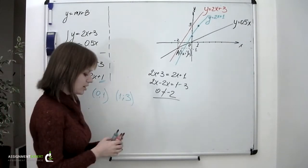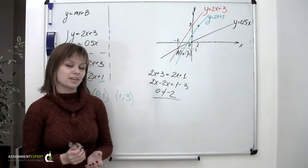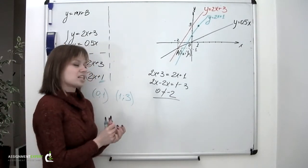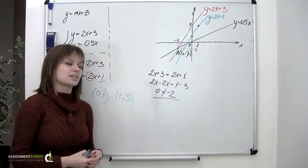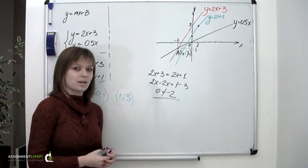And that, by the way, is a piece of information to remember. If the lines have the same slopes, that means that the lines are parallel and the system has no solutions.